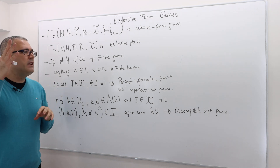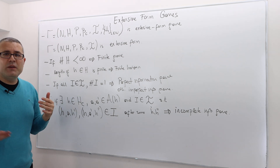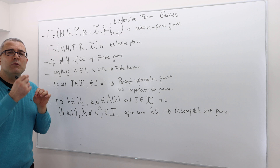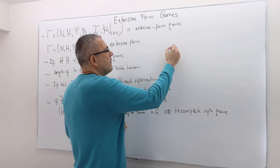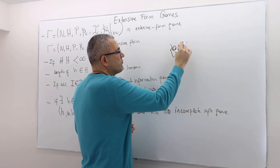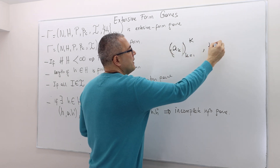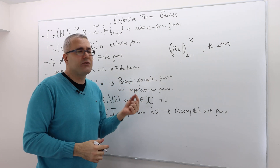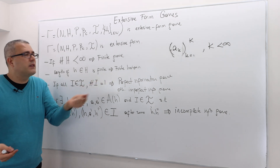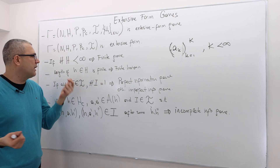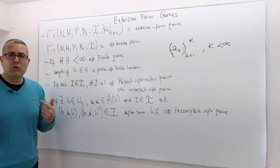To talk about infinite horizon or finite horizon — meaning whether the game is ever-ending or not, like repeated games — we look at the length of each history. If I have a history a_k from one to capital K, where K is less than infinity, the length of this history is just capital K. If the length of all histories is finite, we call this a finite horizon game. Otherwise, if there exists at least one history with a length of infinity, we call it an infinite horizon game.